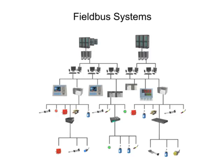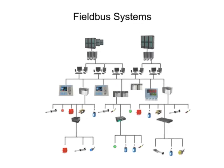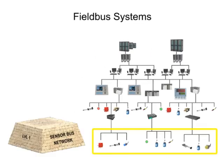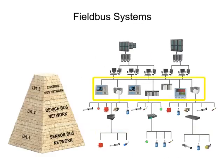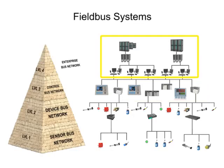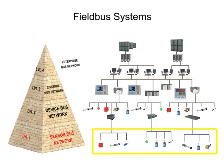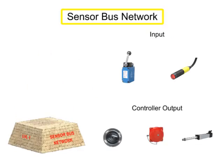Fieldbus industrial networks can be broken down into four levels, each with increasing levels of complexity. The most basic level is the sensorbus networks. Sensorbus networks are the least complex of networks developed for industrial application. In these networks,